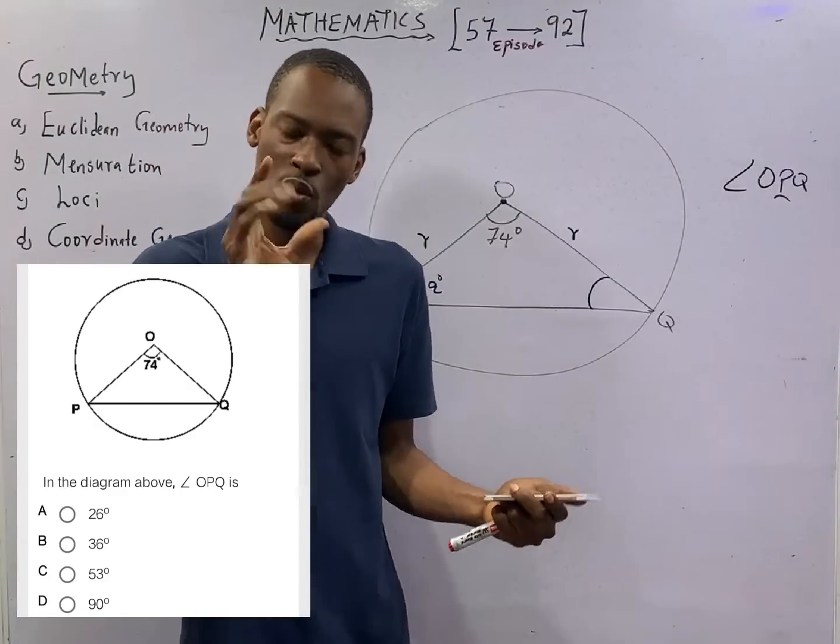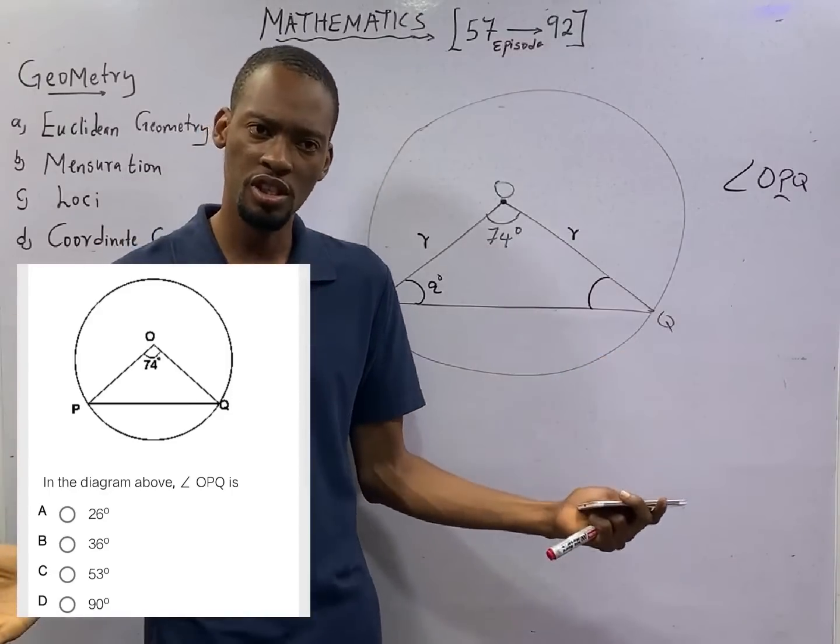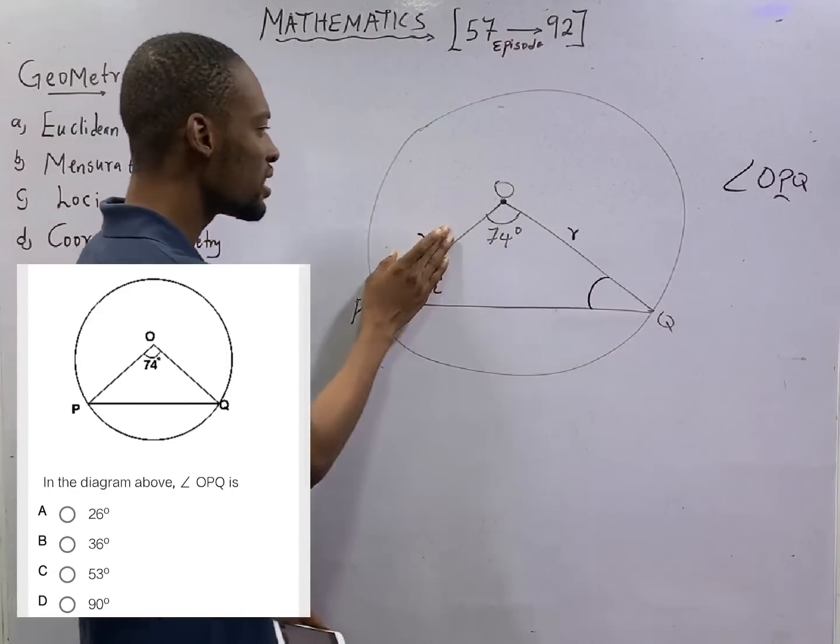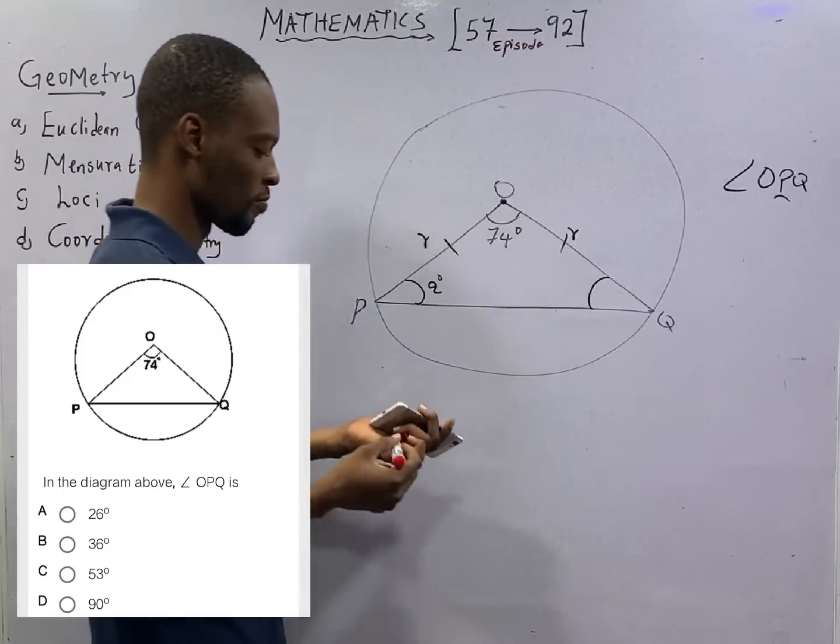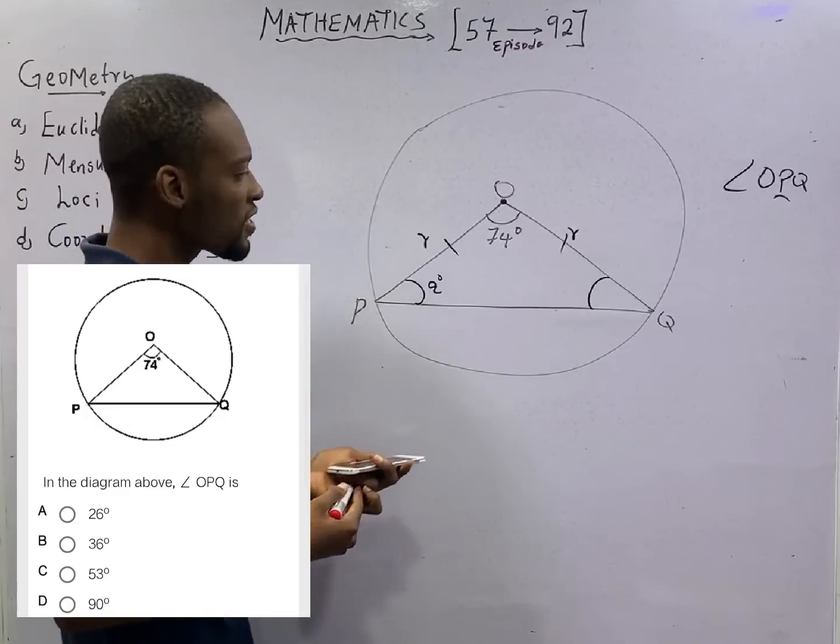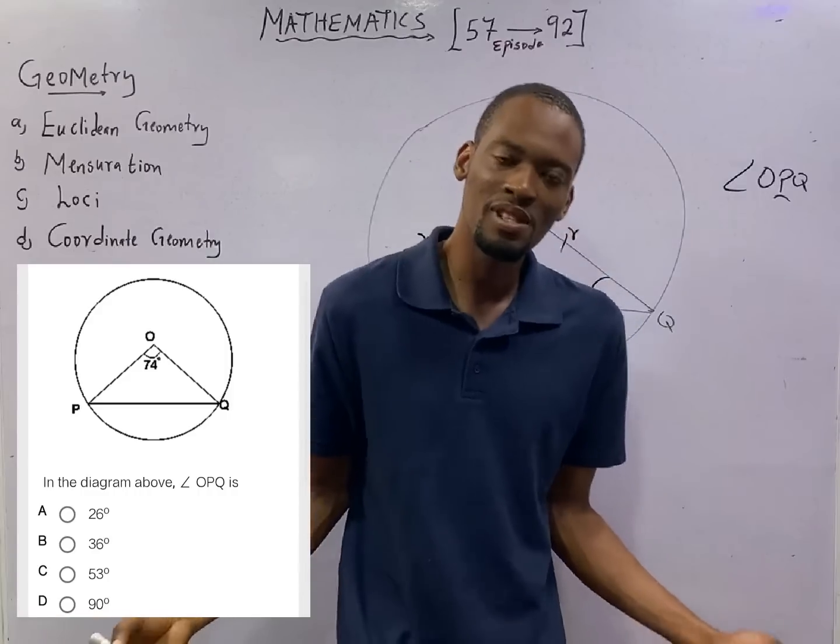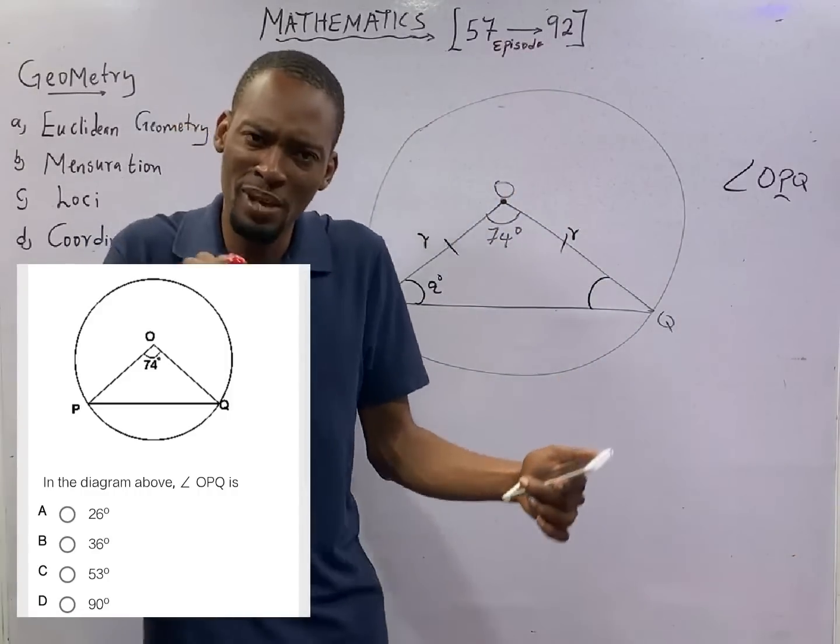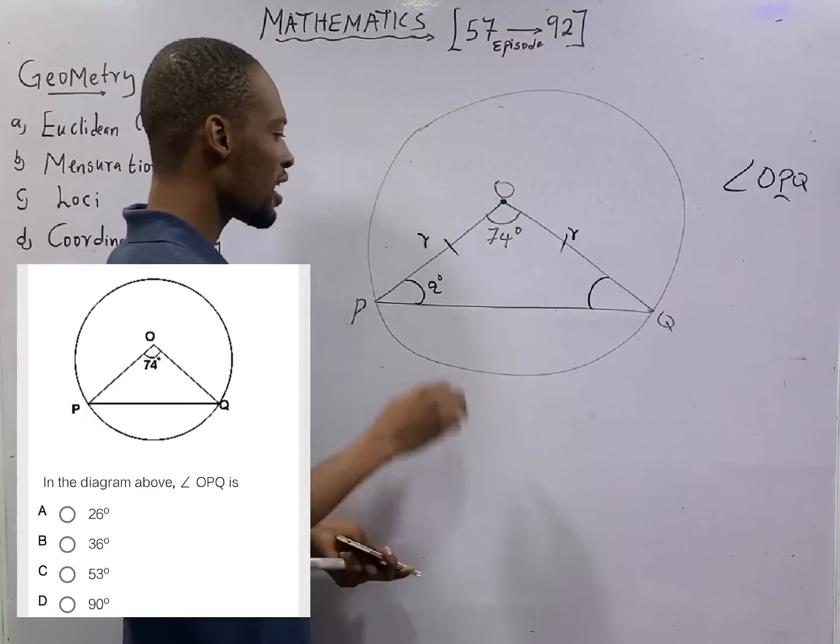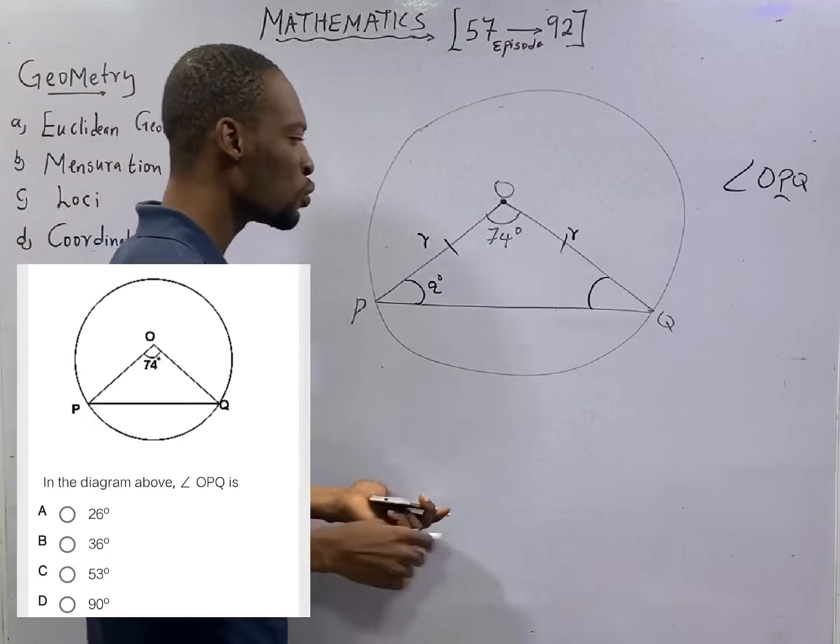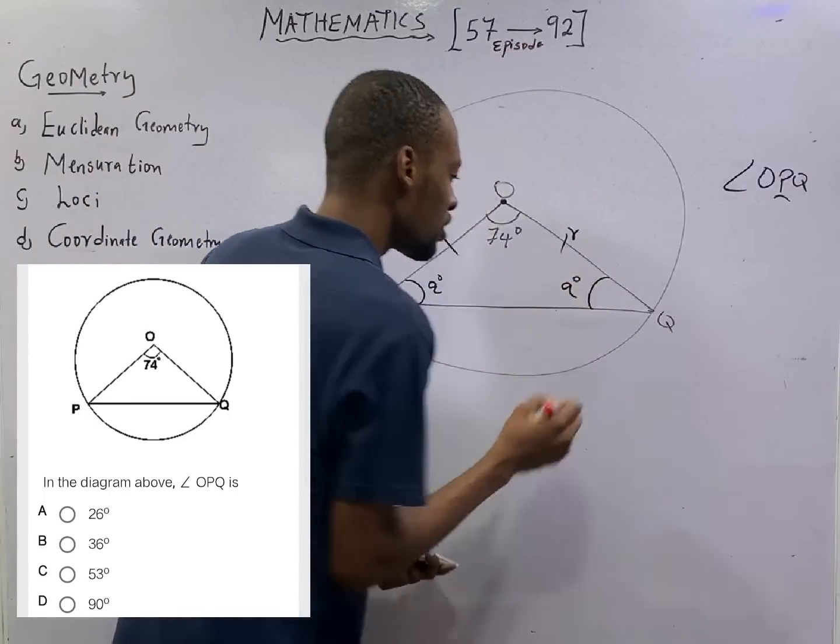For a single circle, or for one circle, radius is obviously the same. It doesn't change. So this length is equal to this length, which means here is what we see here. For any triangle where we have two sides to be the same, it simply means the base angle will also be the same. Since we have 74 degrees here, anything we have here, that is what we will have here. So if here is A degrees, here will also be A degrees.